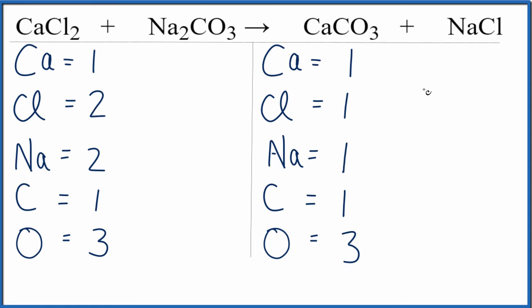To fix that, if I put a coefficient of two in front of the NaCl, now I have the one times the two. That'll give me two of the sodium atoms. Then the chlorines, I have the one times the two, and that'll give me two chlorine atoms.